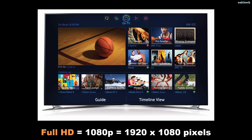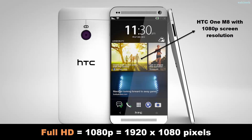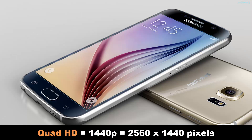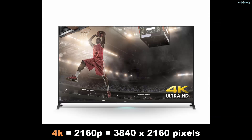Next up, Full HD is 1080p, which we find on most newer high definition TVs and current generation cell phones. The resolution is 1920 by 1080 pixels. Then we have Quad HD, which stands for 1440p — mostly for the latest and greatest smartphones such as the Samsung Galaxy Note 4 or the Samsung Galaxy S6.